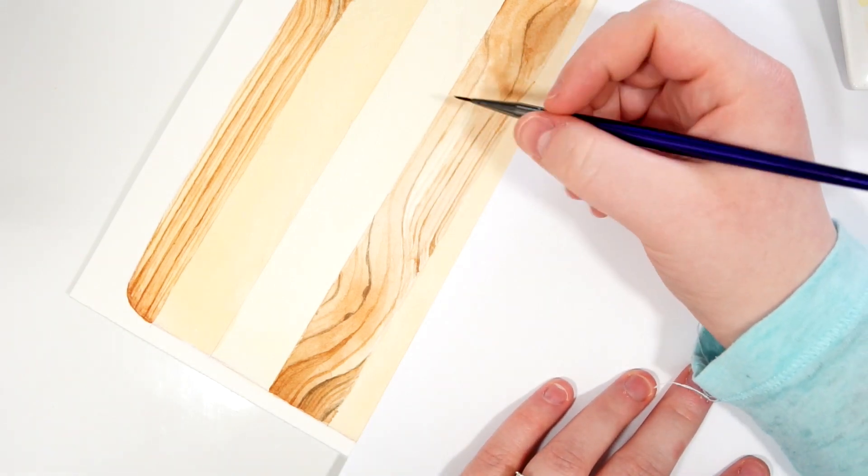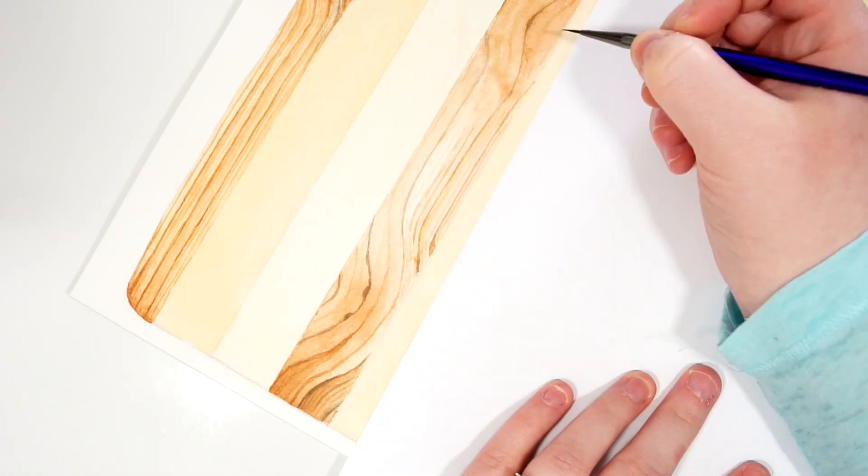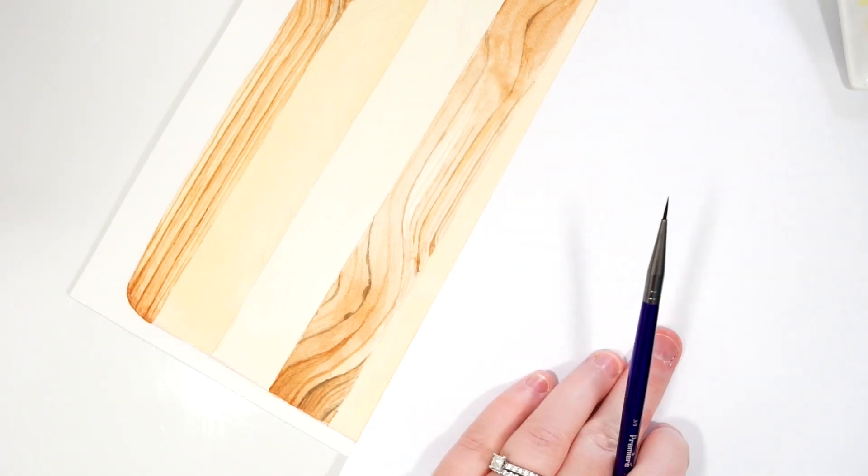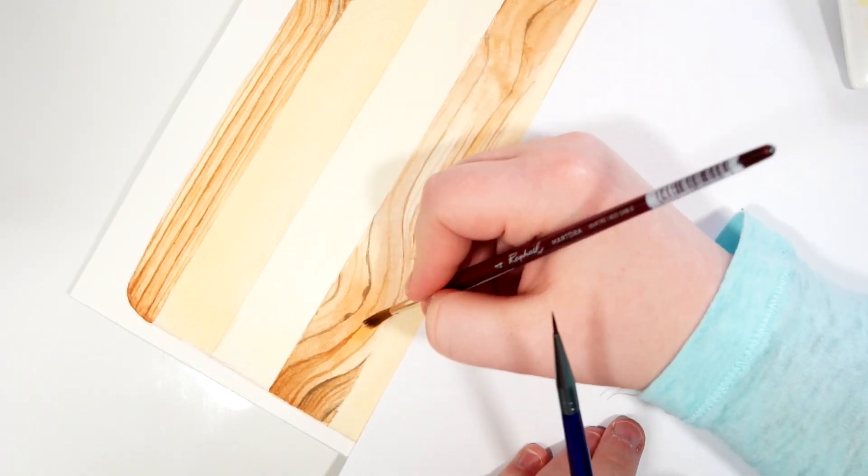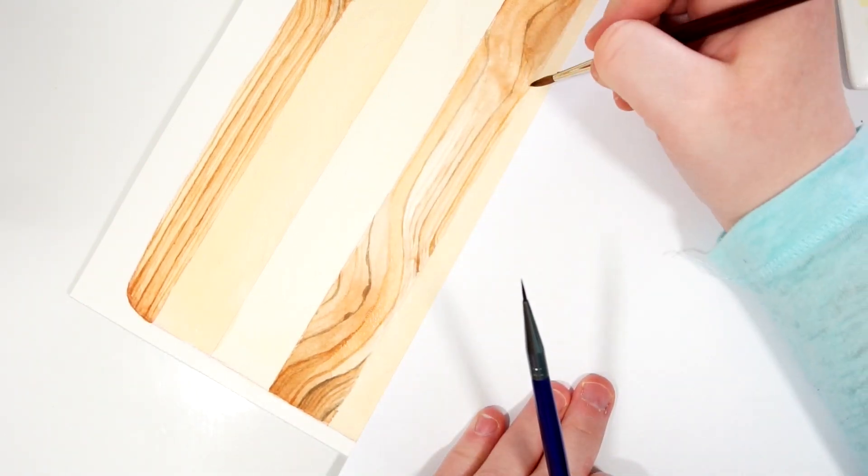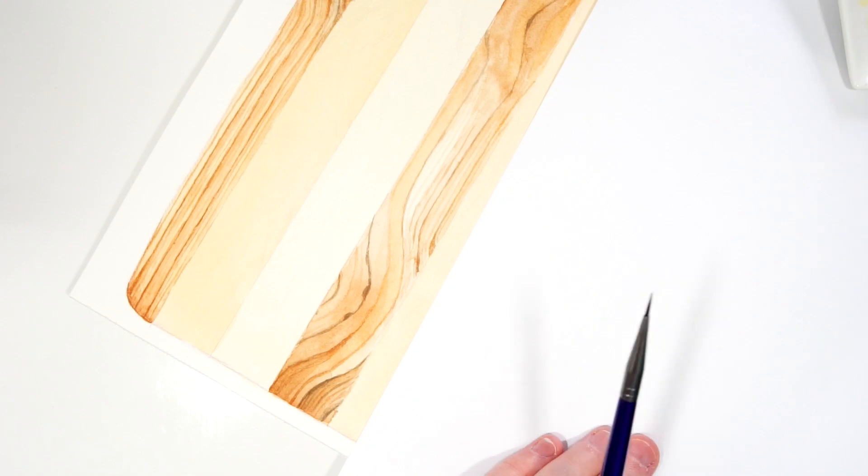I'm going through and I'm thickening up some of the lines in my wood grain and I'm also adding some darker segments to my watercolor. Now in between the grain I want to have this kind of variation too, as if you almost have these tiny, almost micro sections in between the grain of the wood.